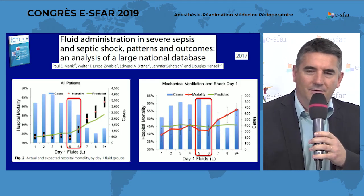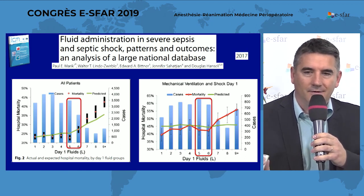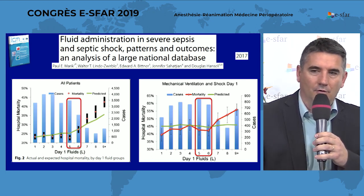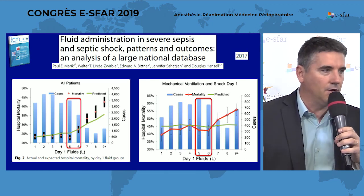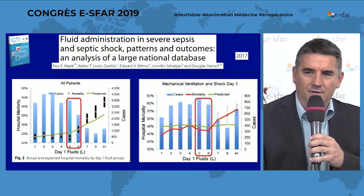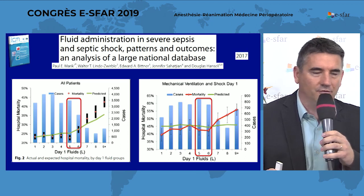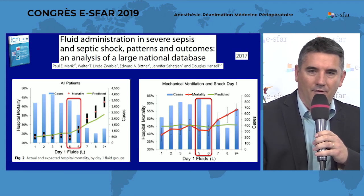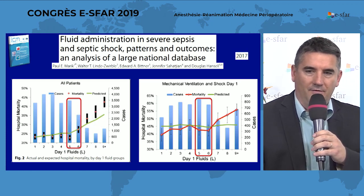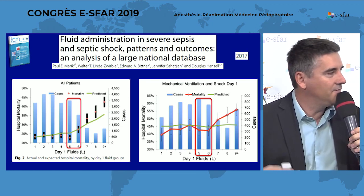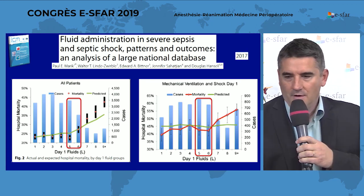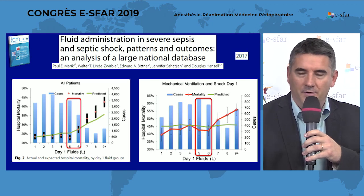In the literature, we clearly found different levels of volume where there is an inflection point between good survival and higher mortality. In one large study, they found about five to six liters — after five to six liters of fluid filling, there is a clear inflection point with higher mortality. But again, it's very difficult to know if the sickest patients received more fluid, since this is a retrospective study on a database, not a randomized controlled trial.